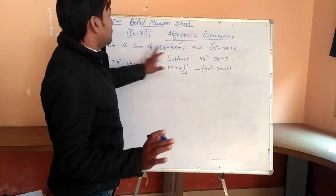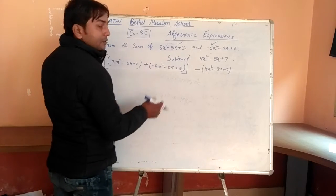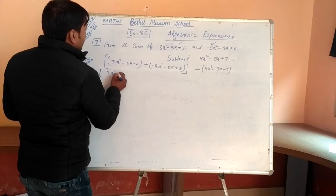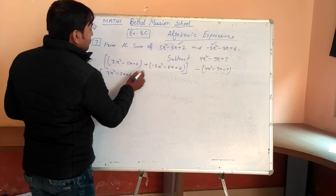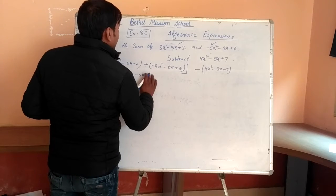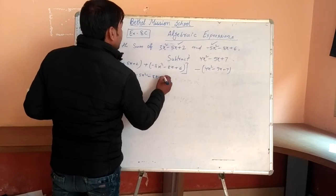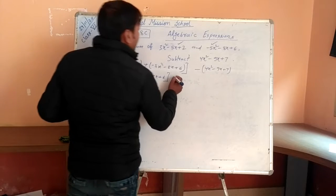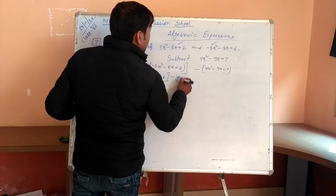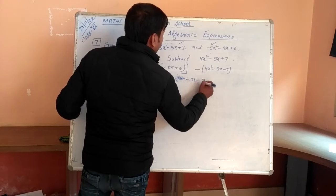First, we have to write according to the like terms. Now solve. Under the bracket we have to solve first. 3X squared, remove the bracket. 5X plus 2 plus, minus minus 5X squared plus minus minus 8X and plus plus 6. And as usual, write 4X squared. Remove the bracket also: 4X squared minus minus plus 9X and plus minus minus 7.